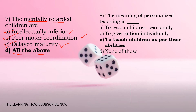The meaning of personalized teaching is dash. Option A is to teach children personally; option B is to give tuition individually; option C is to teach children as per their abilities; option D is none of these. The answer is to teach children as per their abilities — that is what personalized teaching means.